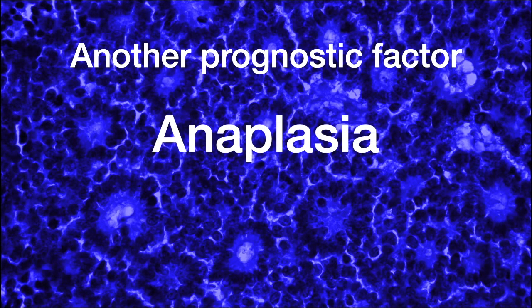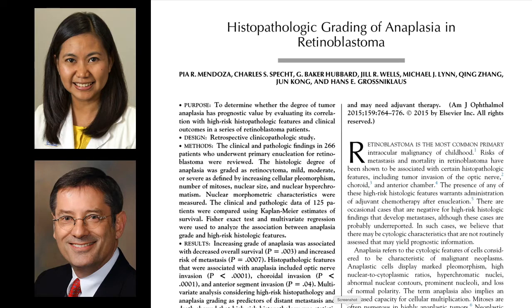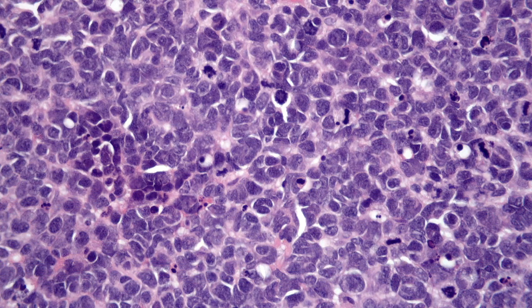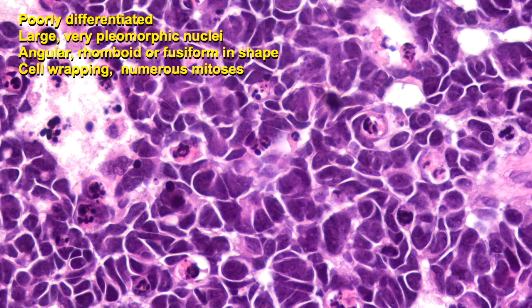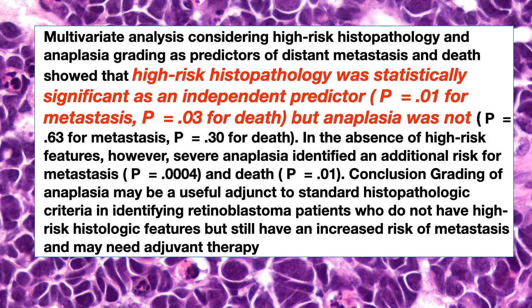Another prognostic factor that's been recently reported is anaplasia. This was a paper by Pia Mendoza and Hans Grossniklaus. Anaplastic retinoblastoma shows poorly differentiated areas with large pleomorphic nuclei — angular, rhomboidal, or fusiform — nuclear cellular wrapping, and numerous mitotic figures. However, anaplasia did not reach statistical significance as a predictor for metastasis or death.